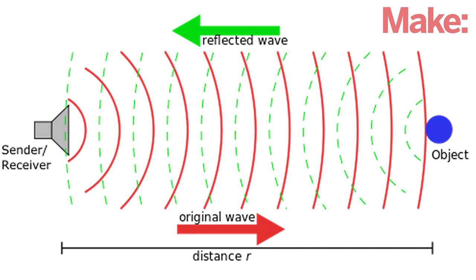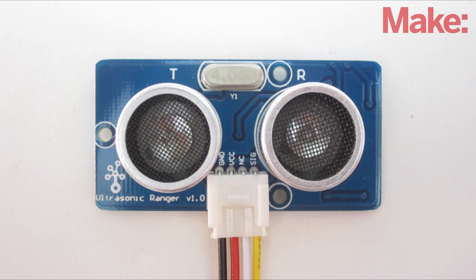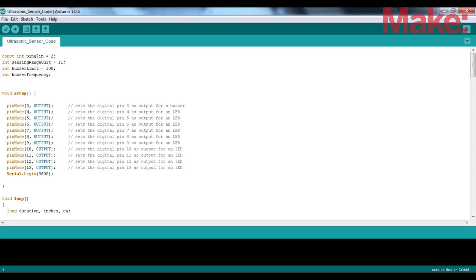This sensor uses sonar to detect the distance to nearby objects. All you have to do is connect it to the Arduino at the 5-volt pin, ground, and a digital pin. Then, upload some sample code.